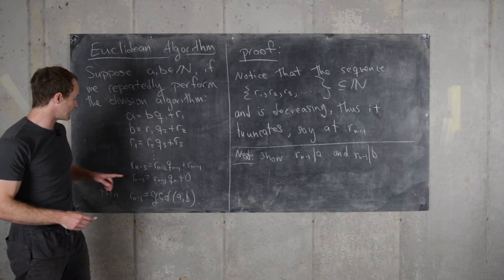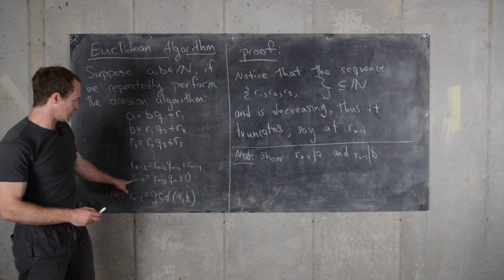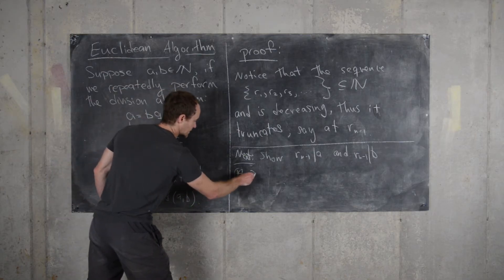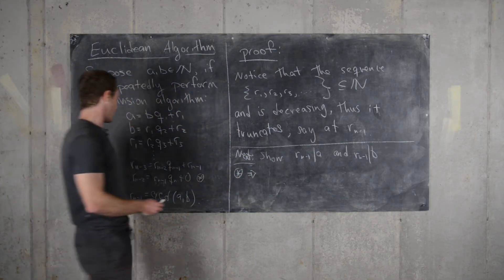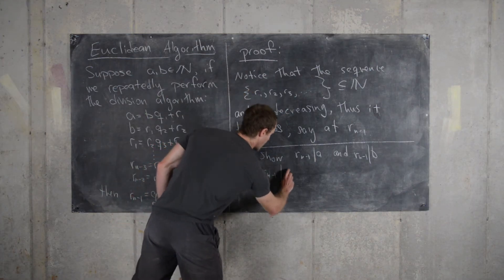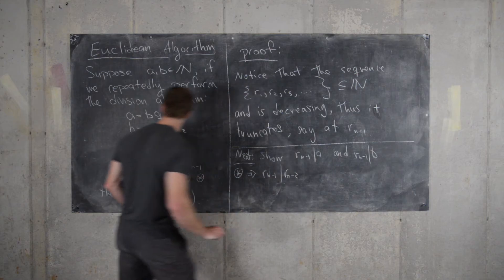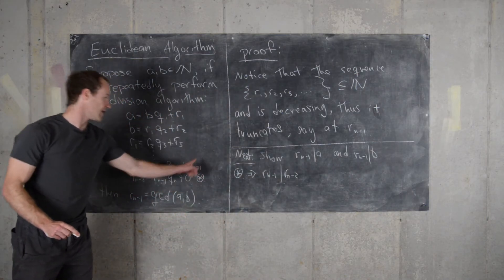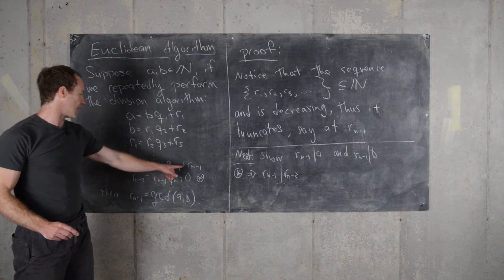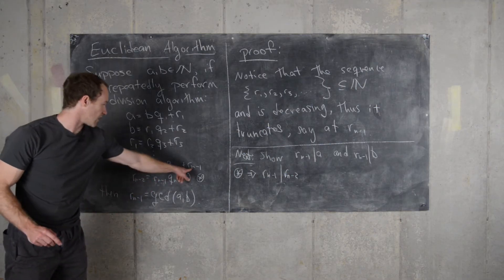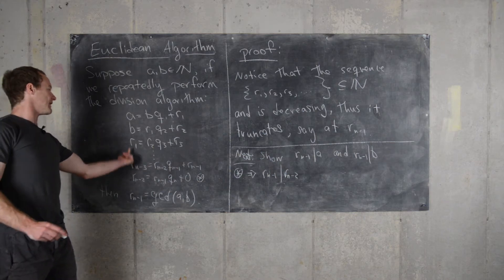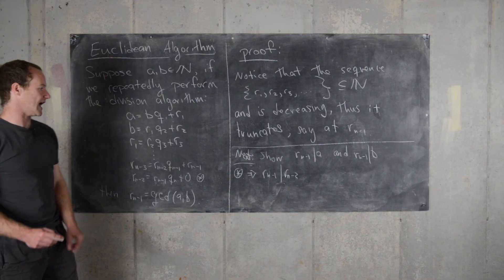And how can we do that? This equation right here shows that R N minus 1 divides R N minus 2. And then moving up from there, we see that that will show that R N minus 1 divides R N minus 1 and R N minus 2. So it has to divide R N minus 3, and then all the way to the top, it'll divide A and B.